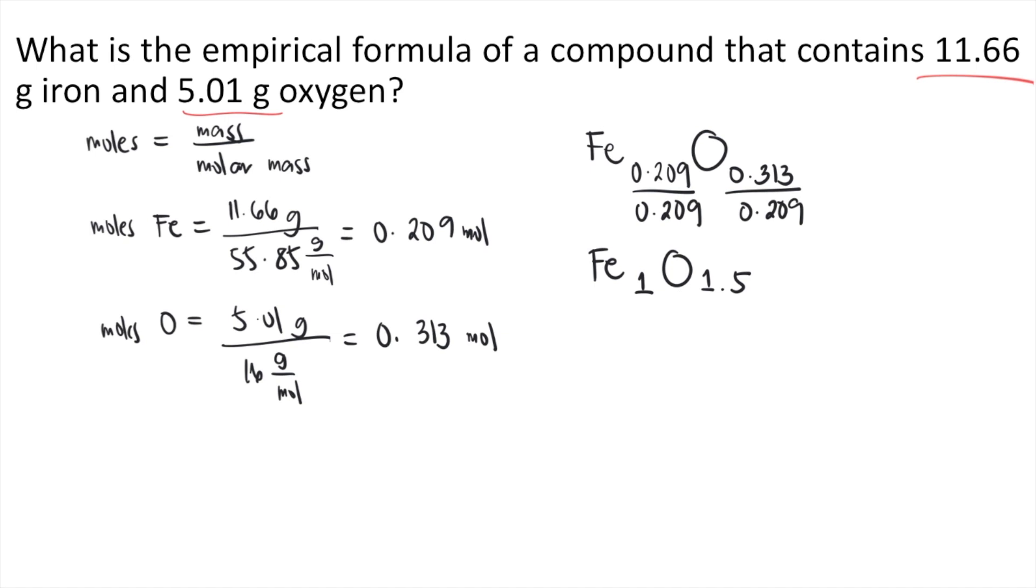Now in empirical formula, the subscripts must be whole numbers. So we need to get rid of the decimal. In order to do that, we need to multiply all of the subscripts by 2.